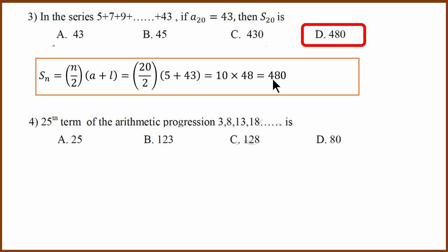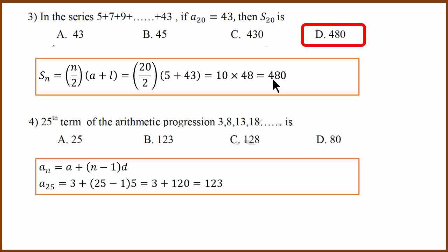Fourth question: the 25th term of an arithmetic progression is asked where the first term is 3 and the common difference is 5. Using the formula a plus (n minus 1)d, you get the answer 123. Answer is B.